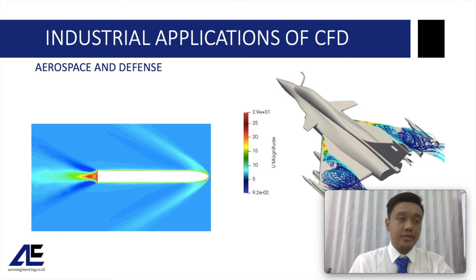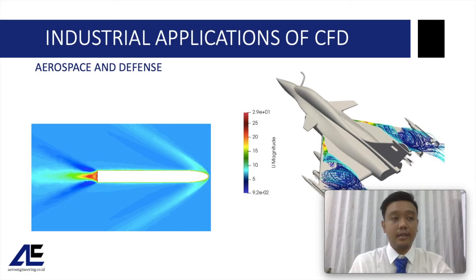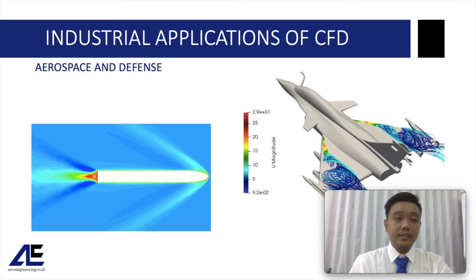The picture on the left shows a projectile flying at speeds much greater than the speed of sound, generating shock waves. With CFD we can easily predict the flow and even the temperature distribution without physically building a supersonic wind tunnel. On the right, we can see a rolled-up vortex generated on a delta-wing aircraft. This vortex is very important for generating lift and preventing stall at very high angles of attack — a study that is very sensitive and sometimes hard to conduct in wind tunnel or water tunnel tests.